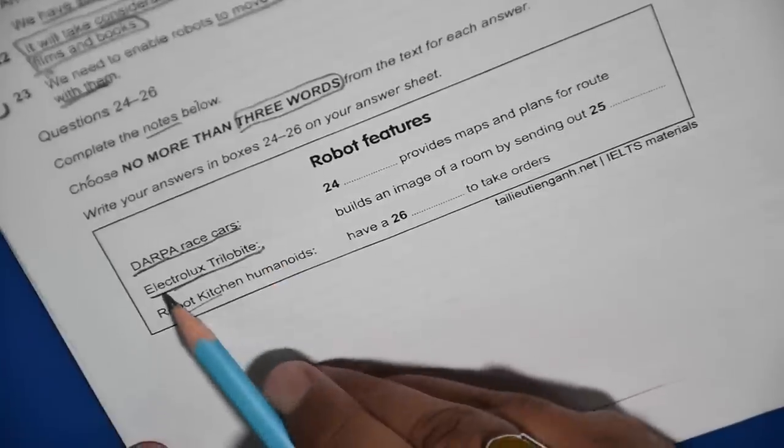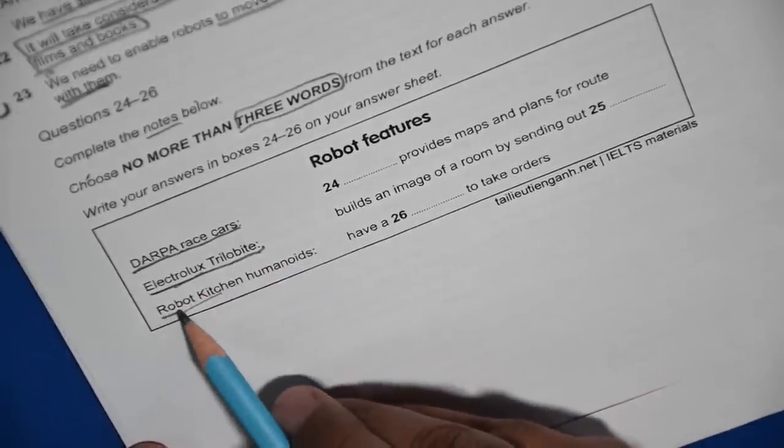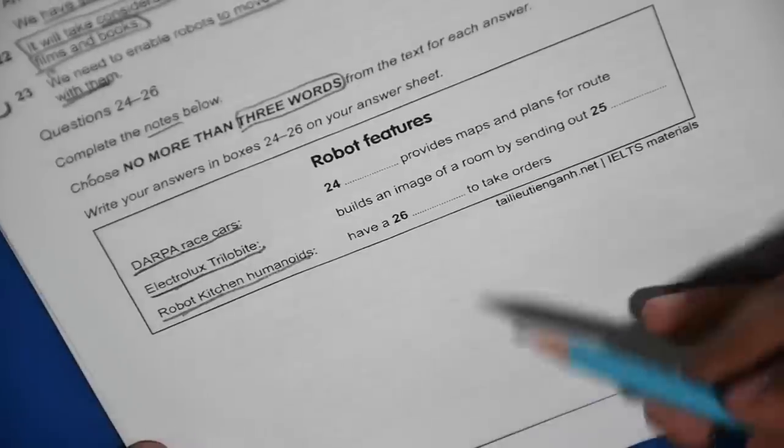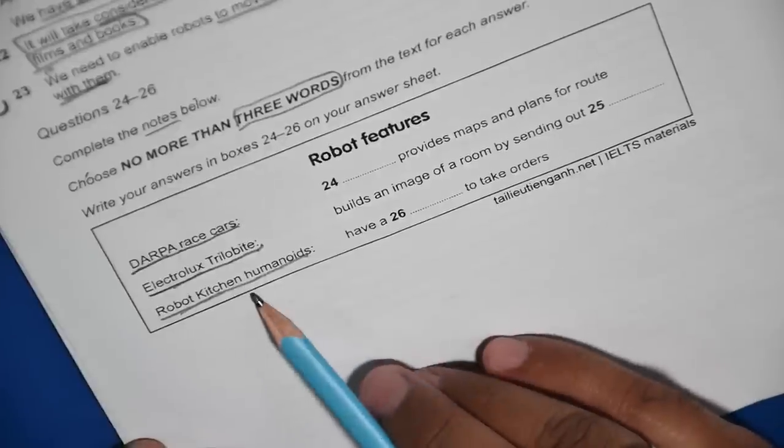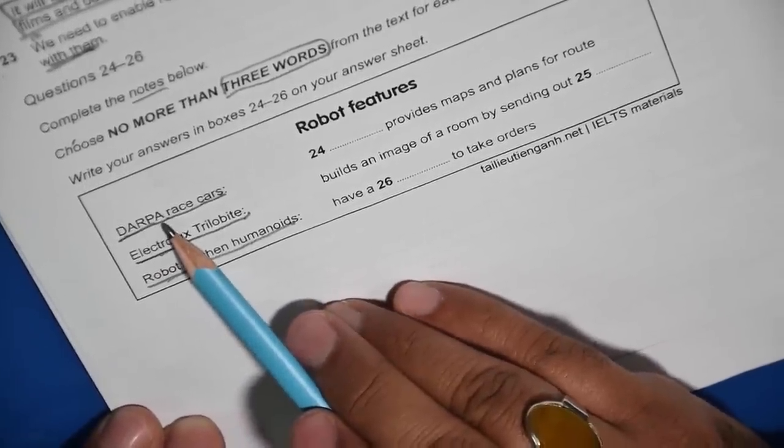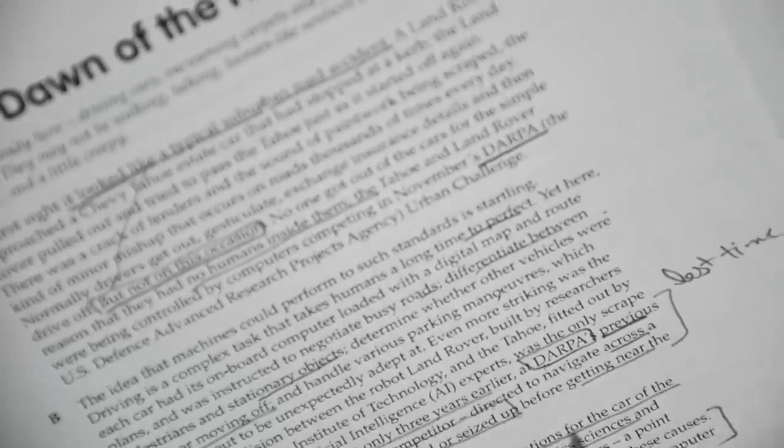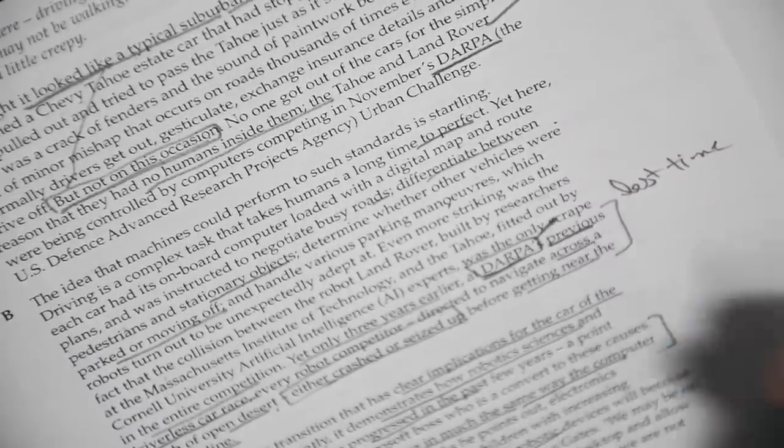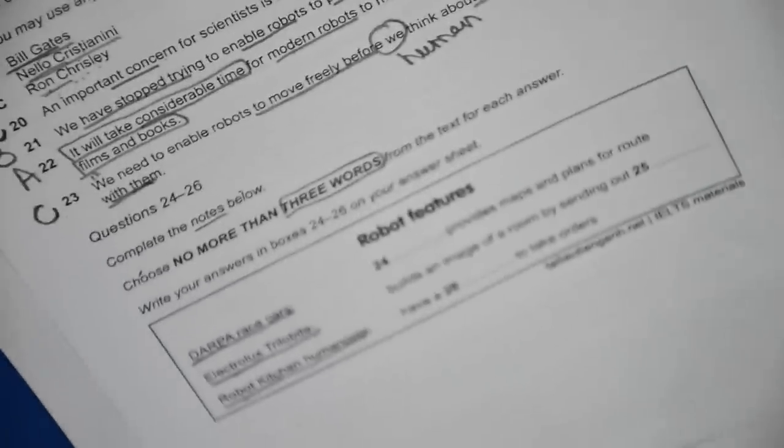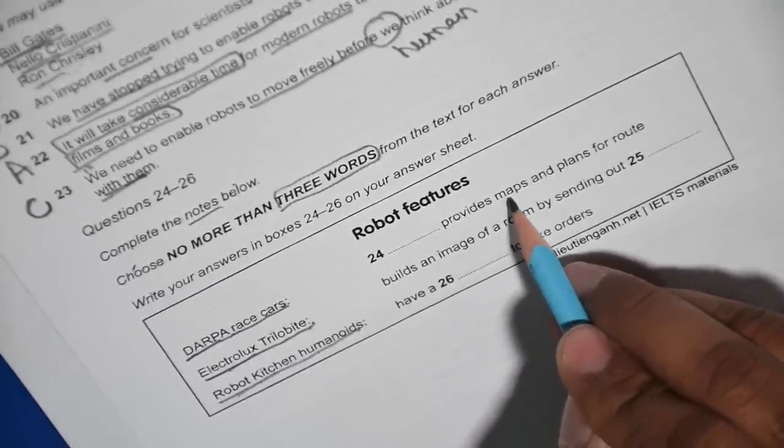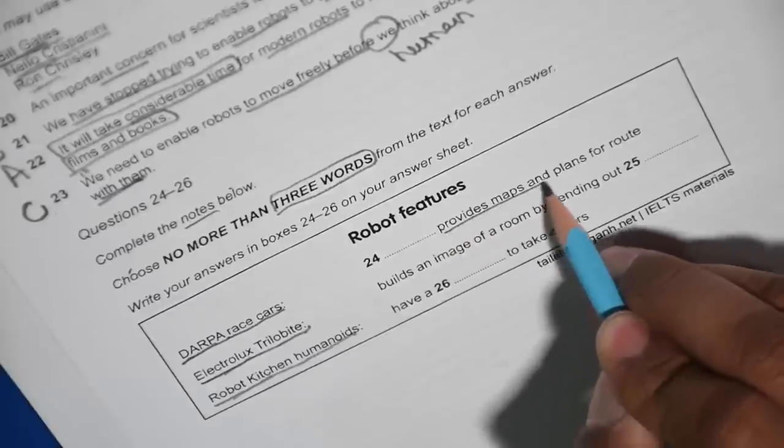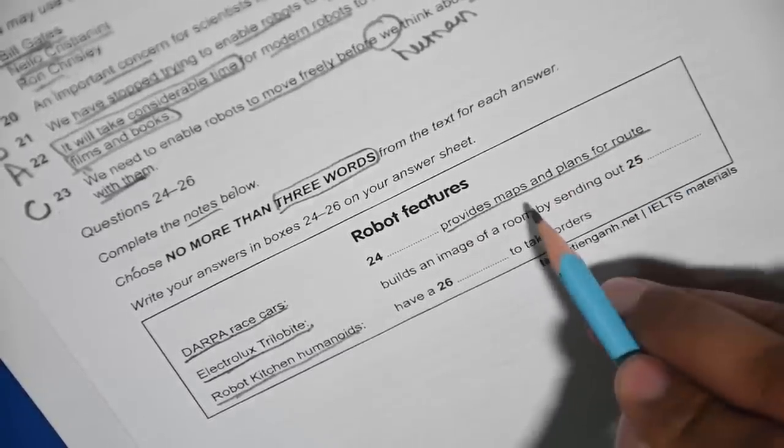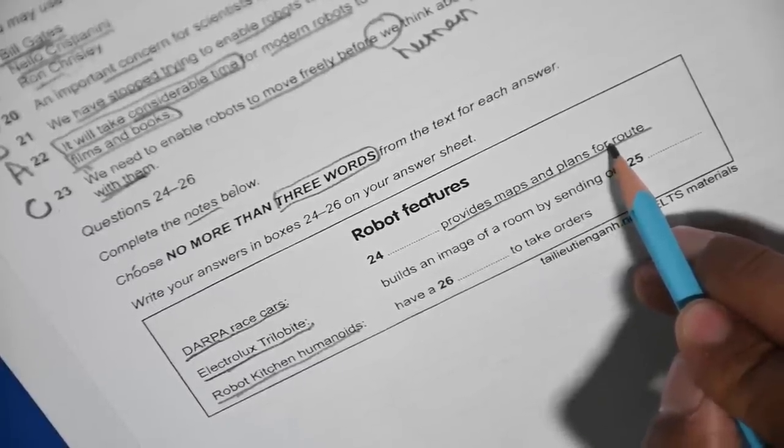Electrolux trilobite at one point I underlined that as well, and then robot kitchen. Remember that the next questions are going to be easier for you because you are familiar with the passage. So let's scan for Debra race cars. Now we need to see where is the mention of Debra race cars. Here we've got Debra right at one point they mentioned Debra over here, and yes there is another Debra over here, so one and two. Now we need to read the question. What is the question? Debra race cars dash provides maps and plans for routes.